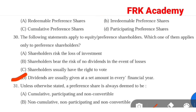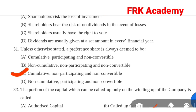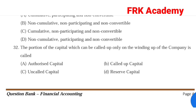Question 31: Unless otherwise stated, a preference share is always deemed to be. Option A: cumulative, participating and non-convertible. Option B: non-cumulative, non-participating, non-convertible. Option C: cumulative, non-participating and non-convertible. Option D: non-cumulative, participating and non-convertible. Answer: Option C, cumulative, non-participating and non-convertible.